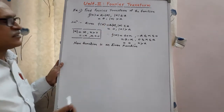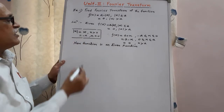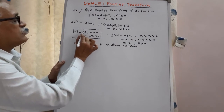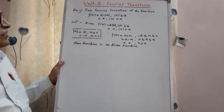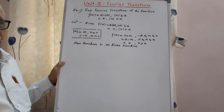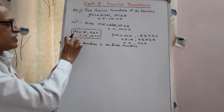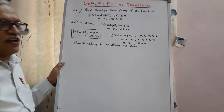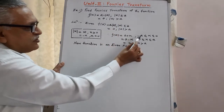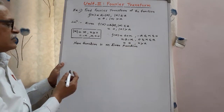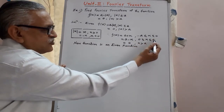Here the important term is mod x. We know that mod x has two values: plus x for positive x, and minus x for x less than 0. The condition mod x less than or equals to a means values between minus a to a. Therefore, we split that interval as minus a to 0, and 0 to a.